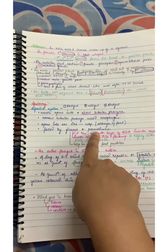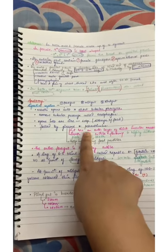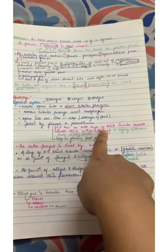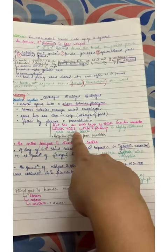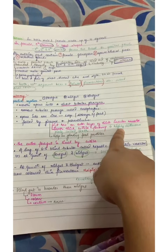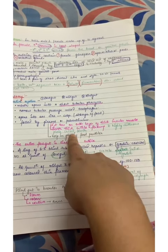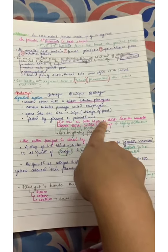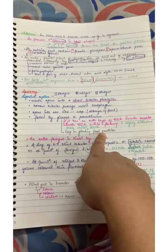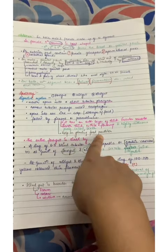And there are gizzards, which is a proventriculus. It has an outer layer of thick circular muscle, inner thick cuticle forming six highly chitinous plate-like teeth. This is all you have to remember - it helps in grinding food particles.